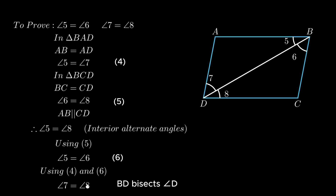Hence, in a given rhombus, diagonal AC bisects angle A as well as angle C, and diagonal BD bisects angle B as well as angle D. So this was it for the video — see you in the next one.